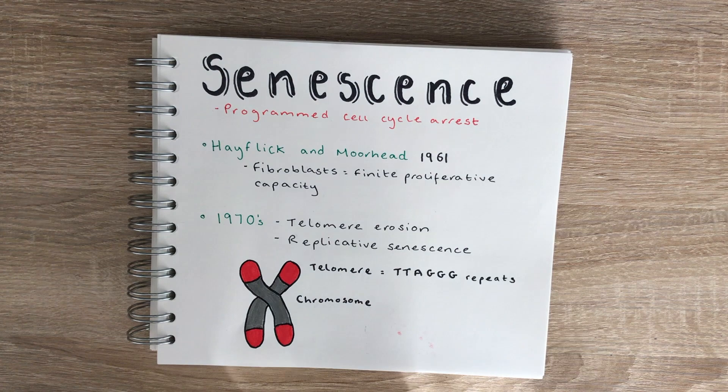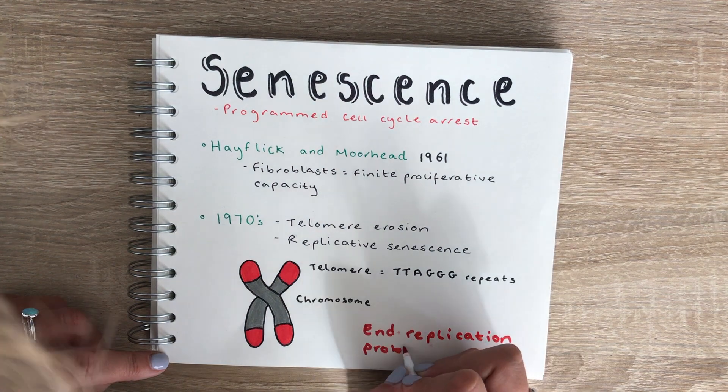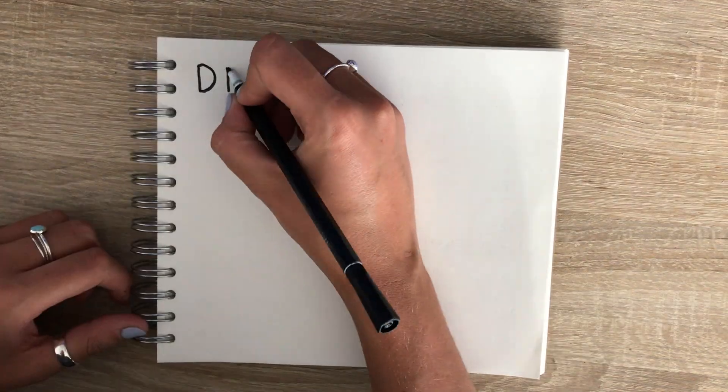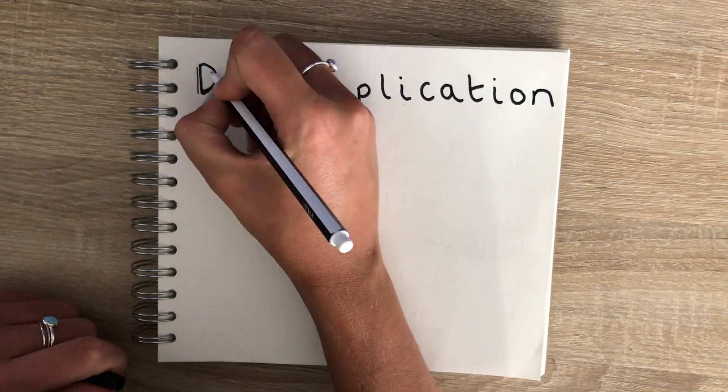Because human chromosomes are linear they have ends, and the very end of the chromosome cannot be fully copied in each round of replication — this is known as the end replication problem. To explain this I'm going to have to go back to basics a little bit and explain how DNA replication works.